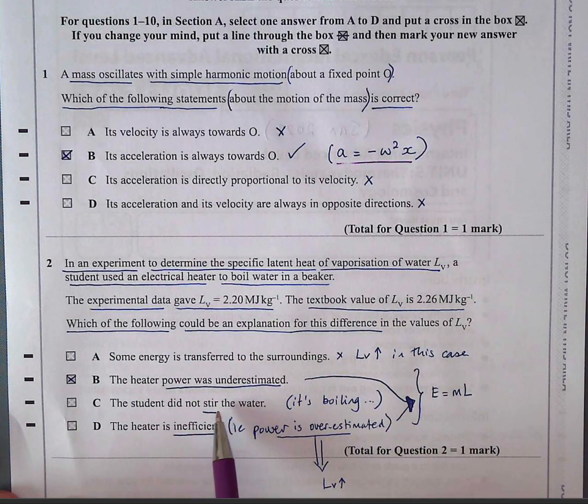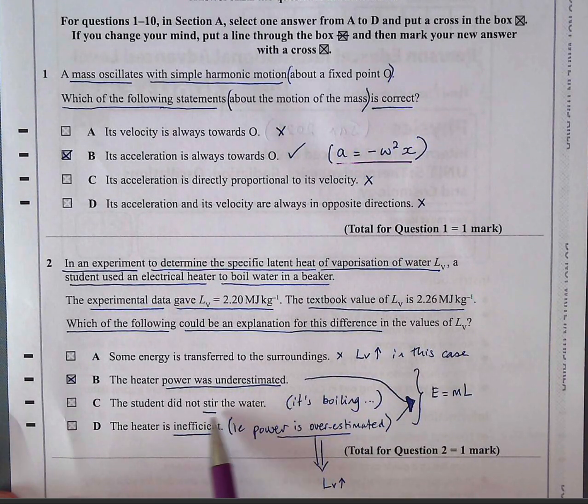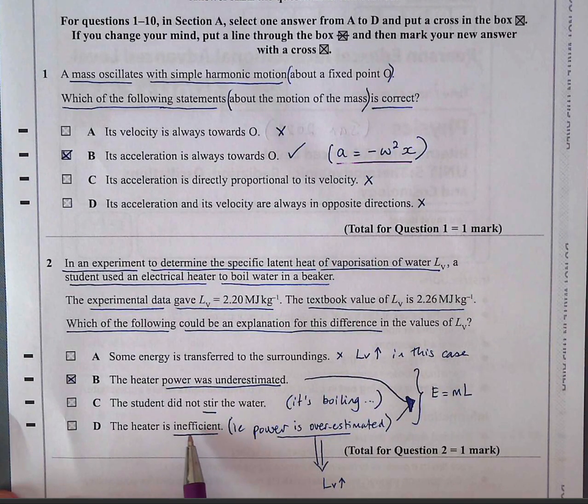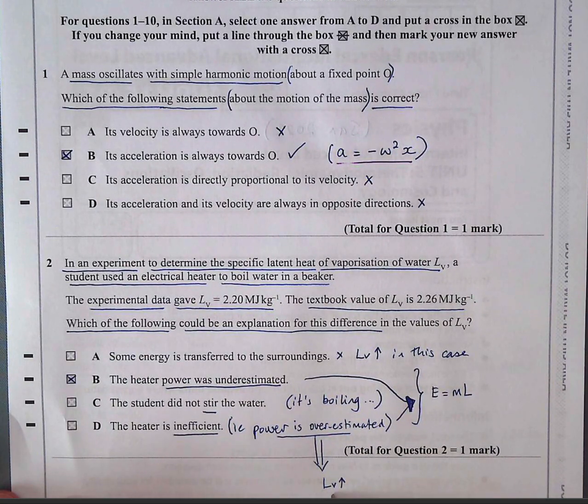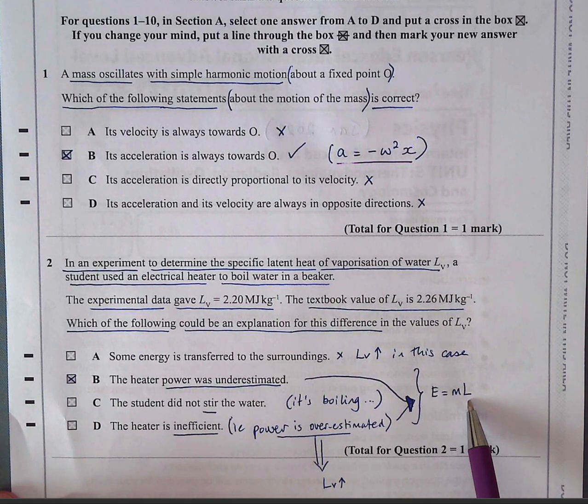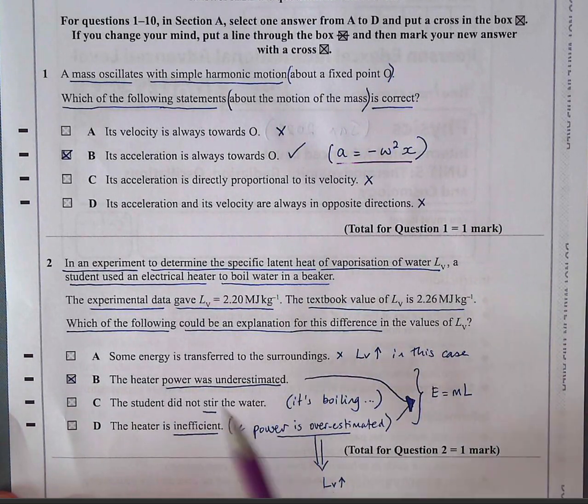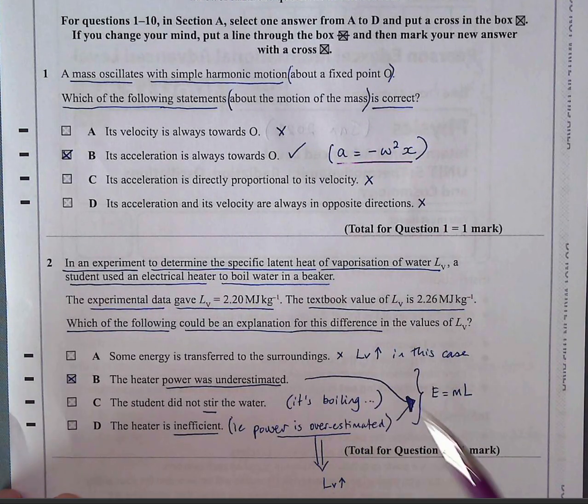The student did not stir the water. Well, that's irrelevant because if it's boiling, the water is already being stirred by the action of boiling. Stirring is to make sure that the water is mixed well and it's already boiling. So that's not pertinent, it's not relevant. The heater is inefficient. If the heater was inefficient, it would overestimate the power, so it will increase the value for latent heat of vaporization. Because remember, the energy going in is due to the power, is proportional to the latent heat of vaporization. So if it's overestimated, the directly proportional LV would be too high. So that means the power must be underestimated.